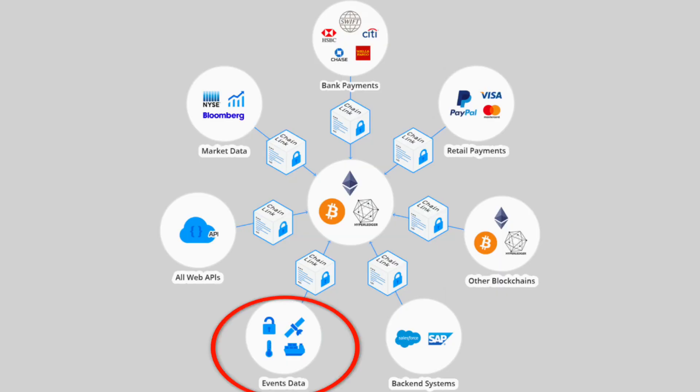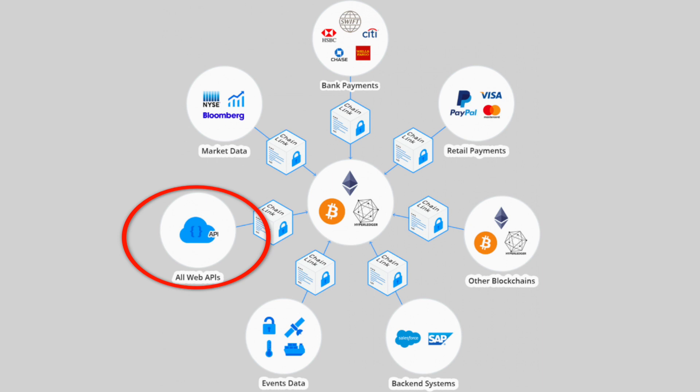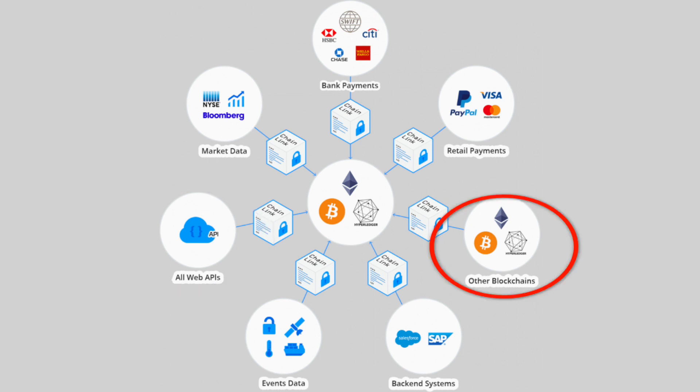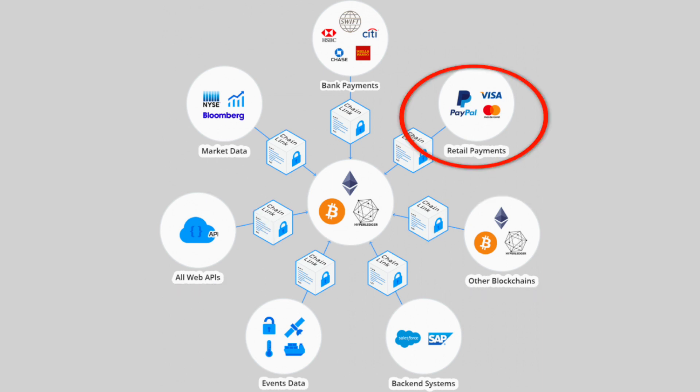That network is responsible for the accurate reporting of real world data. Data can include things like events data, weather data, blockchain data, retail payments, market data, and more. Let me give you a real world example that actually illustrates the concept of Chainlink and the oracles quite nicely.